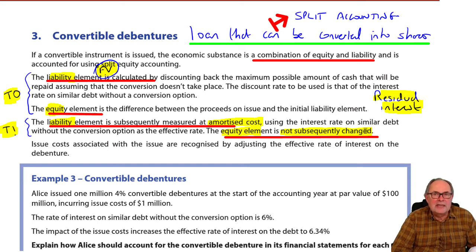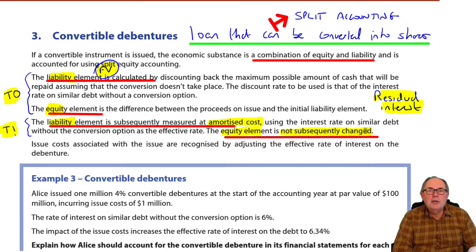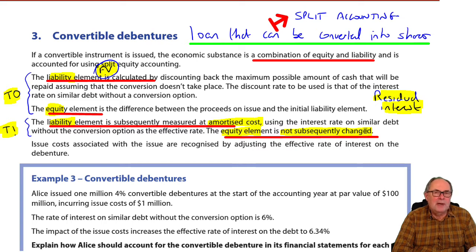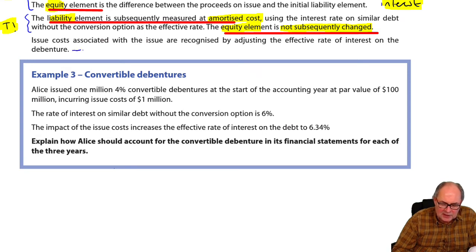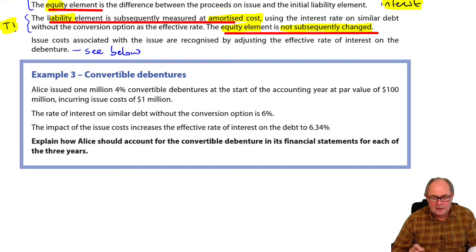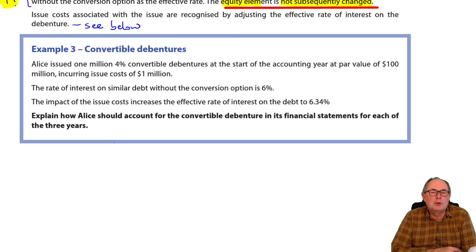The only thing that can confound these a little bit is if you've got issue costs. With liability accounting, issue costs must be deducted from the liability. Well, in fact, you've now got both a liability and an equity, so you have to do an element of prorating of those issue costs. I'll show you that in this example that's coming up. If you want, pause the recording so you have time to read example three, and then we'll very gently take our way through it.